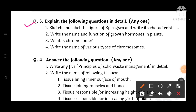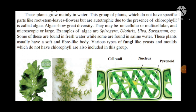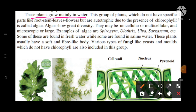Question 3: Explain in detail. First, sketch and label the figure of Spirogyra and write its characteristics. The labeled diagram of Spirogyra includes features such as the pyrenoid and cell wall. Characteristics of Spirogyra: these plants grow mainly in water.